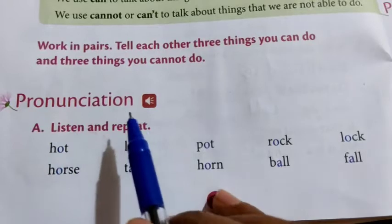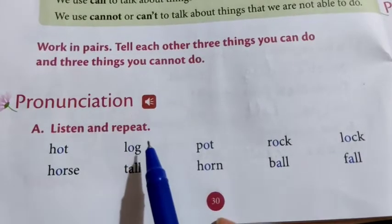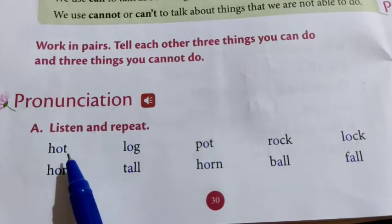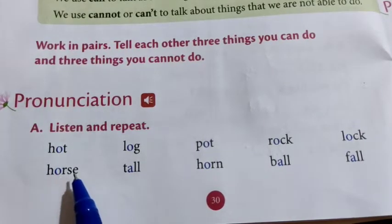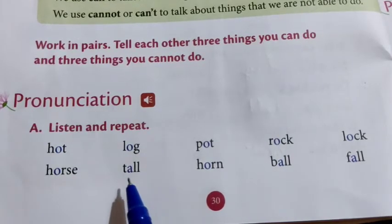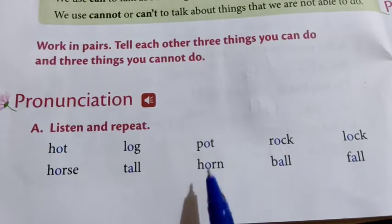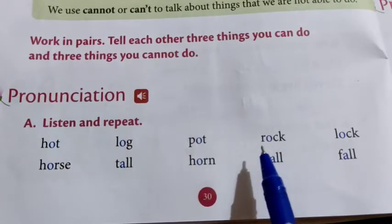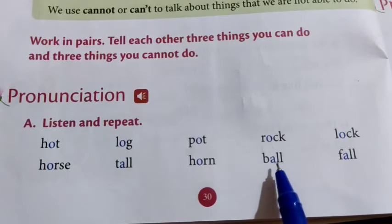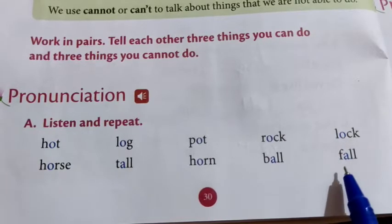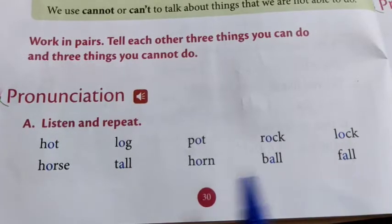Next is pronunciation. Listen and repeat. Read with me: H-O-T, hot. H-O-R-S-E, horse. L-O-G, log. T-A-L-L, tall. P-O-T, pot. H-O-R-N, horn. R-O-C-K, rock. B-A-L-L, ball. L-O-C-K, lock. F-A-L-L, fall.